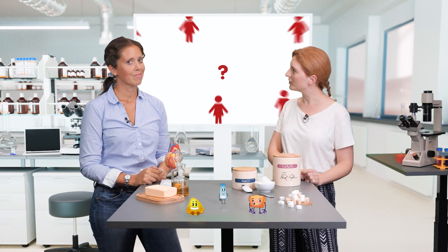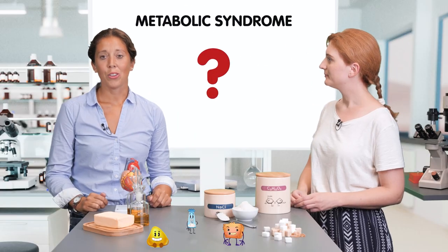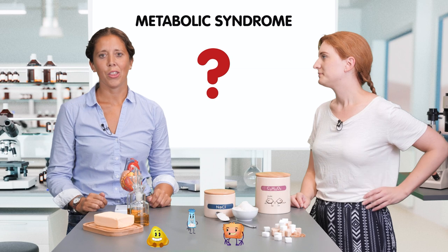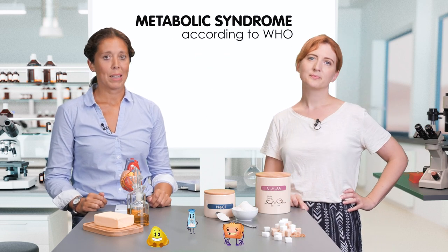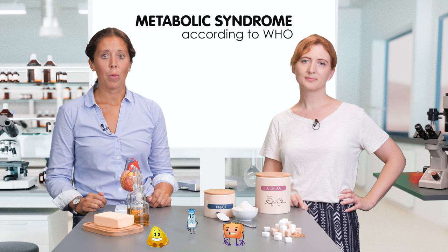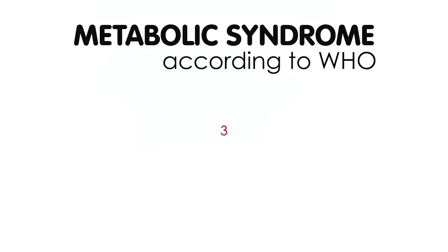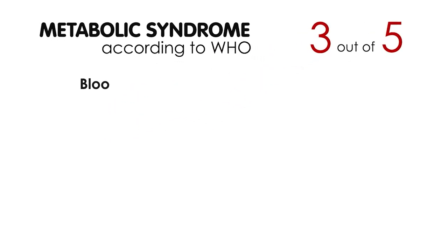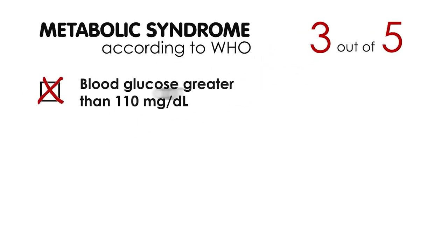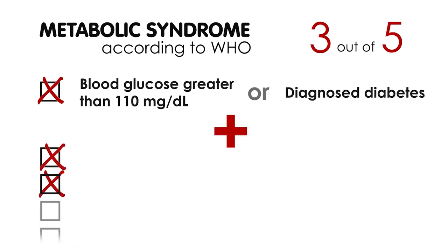But how is it diagnosed? According to the World Health Organization, to be diagnosed with metabolic syndrome, a patient needs to meet three out of these five criteria. Blood glucose greater than 110 mg per deciliter, or diagnosed diabetes, along with the presence of two or more of the following criteria.